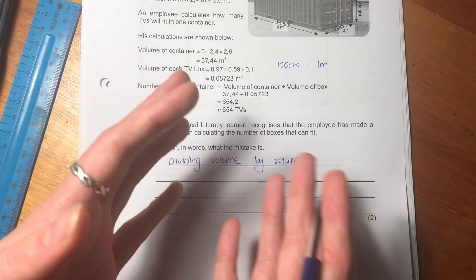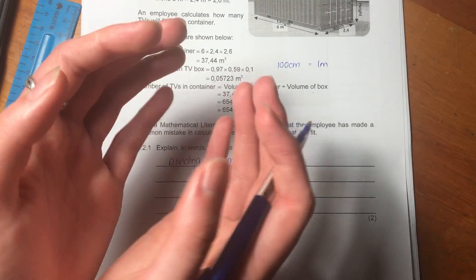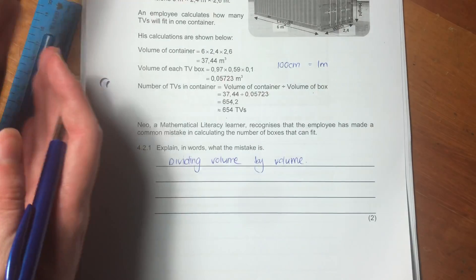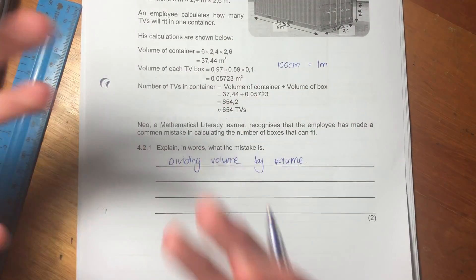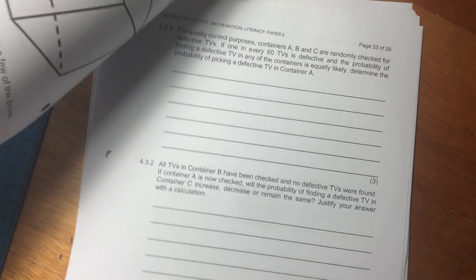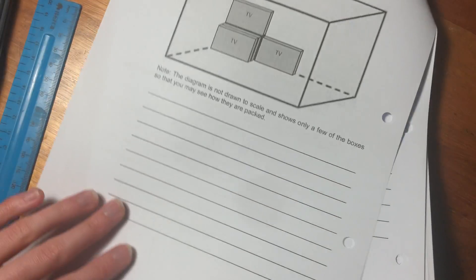So the mistake is dividing volume by volume. That is the mistake that he's made. He's just assumed that whatever the volume of the TV is can just fit perfectly into the volume of the bigger shape. And that's not the case here. So let's just look at the diagram on the next page.